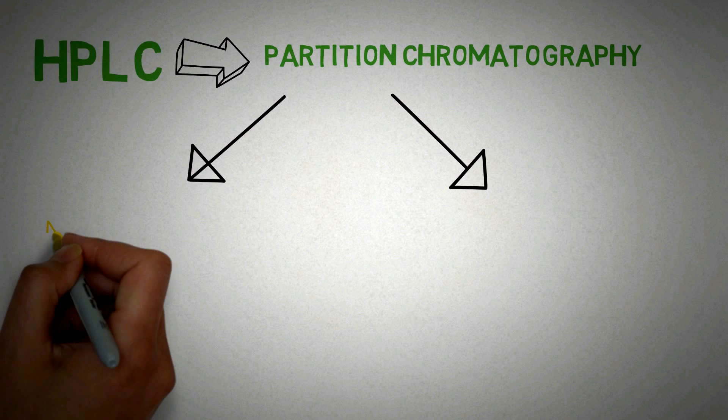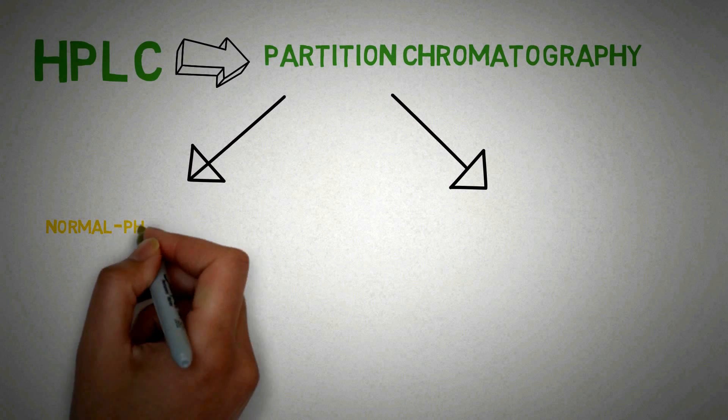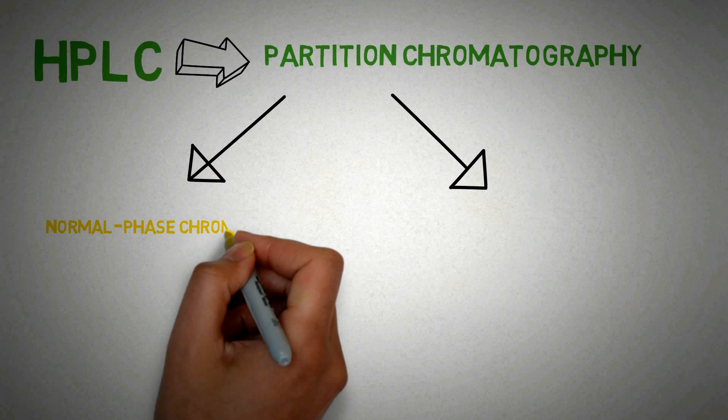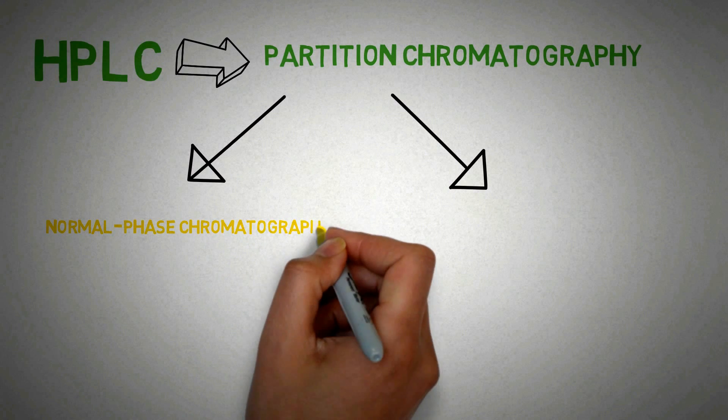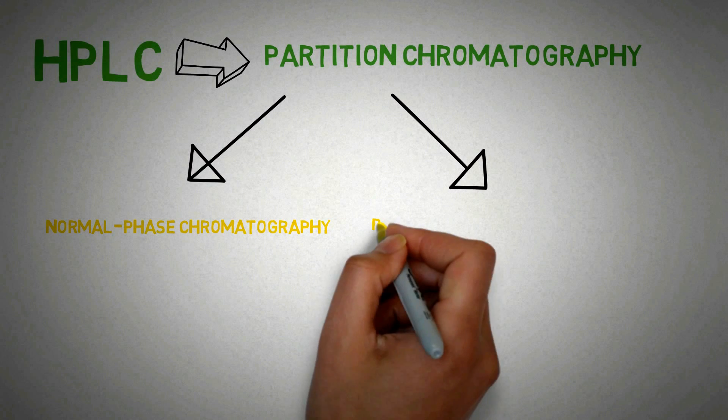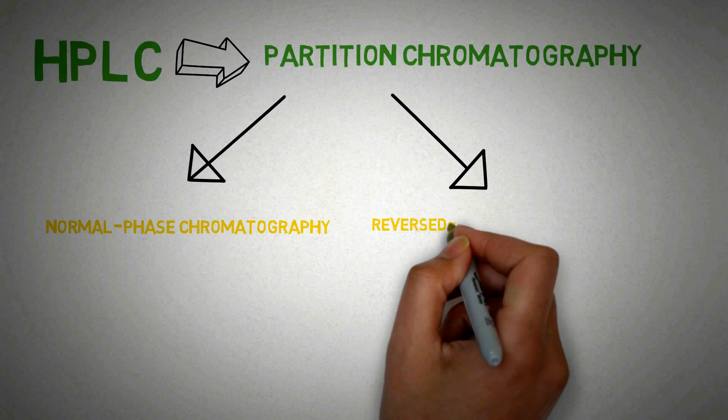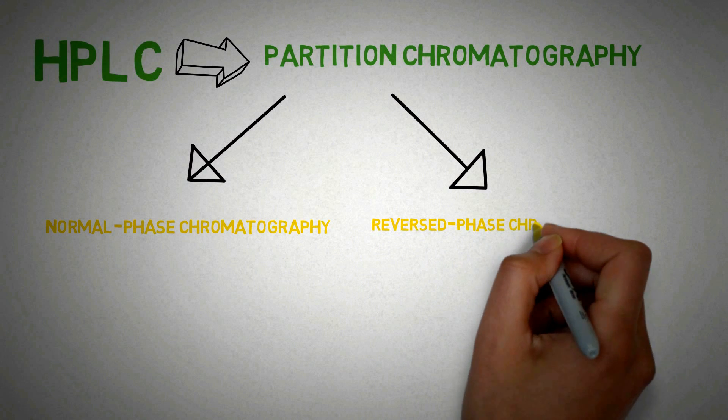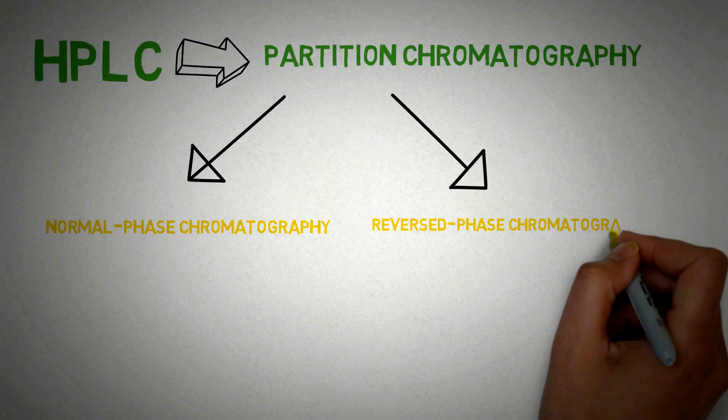The liquid chromatography technique can be divided into two types. Normal phase chromatography (NPC), where polar stationary phase and nonpolar mobile phase is used for separation.